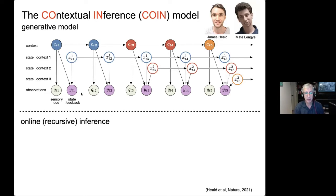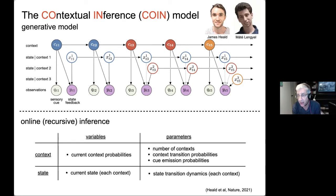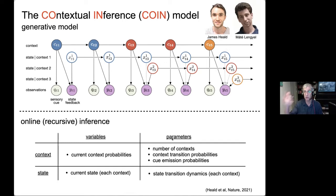The feedback you get after movement depends on which context is active and the state of that context. If the red context is active, you don't experience the blue state — but all other states continue to evolve over time. This is a version of a switching state space model. Motor learning is online recursive inference of everything inside this model. You only get to observe sensory cues — things which don't depend on your action, like the appearance of an object — and state feedback, the proprioceptive/visual feedback of the movement.